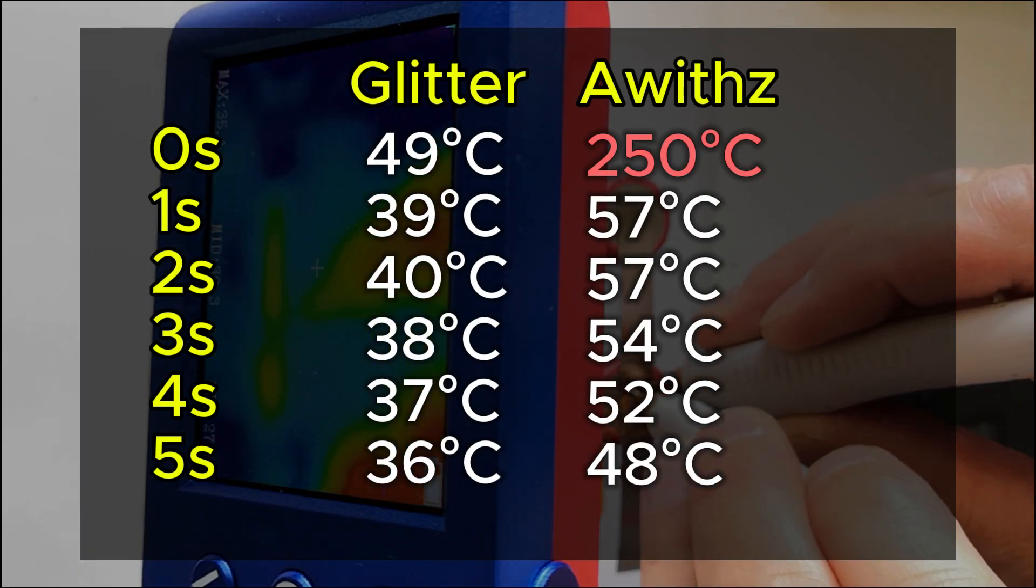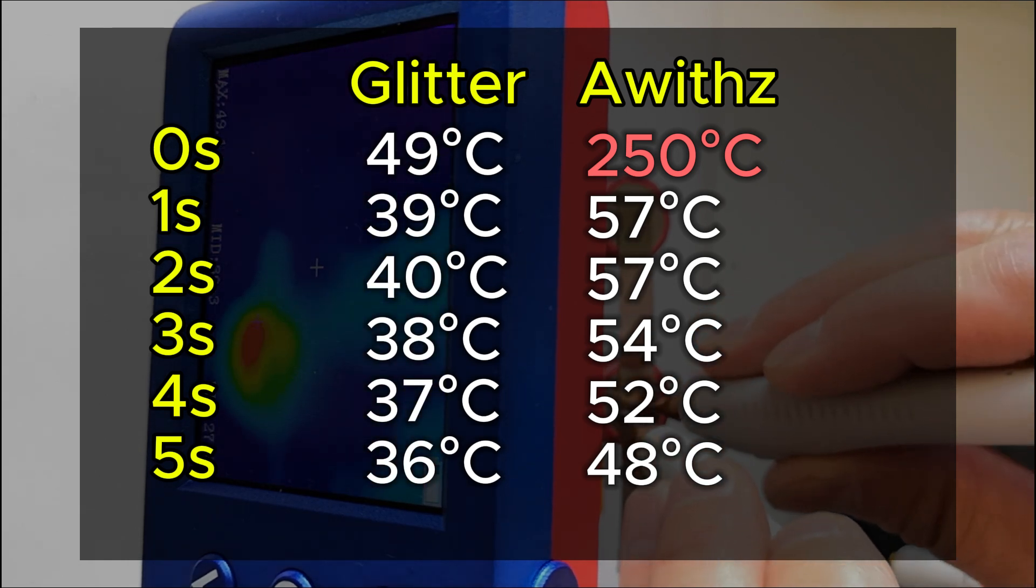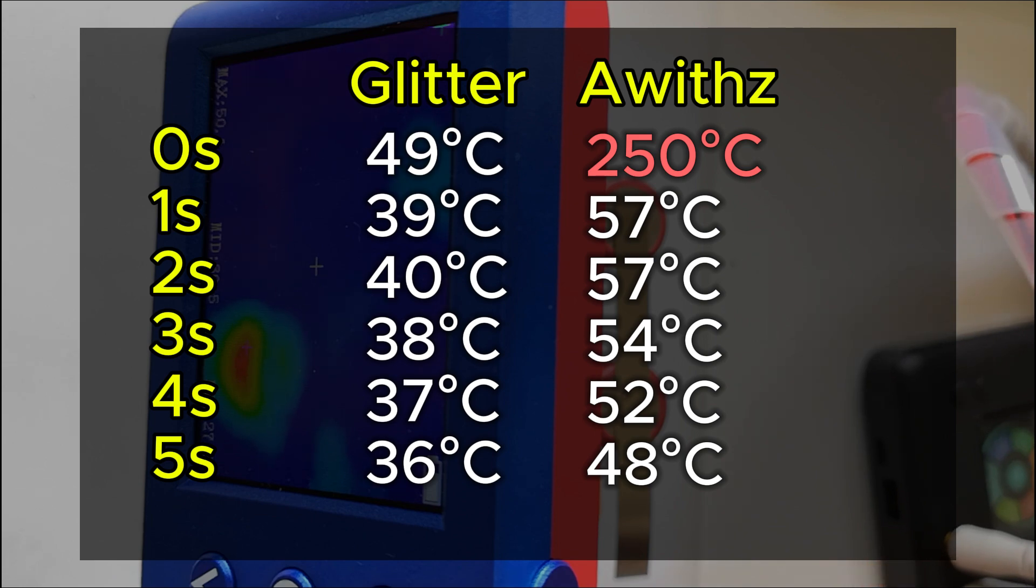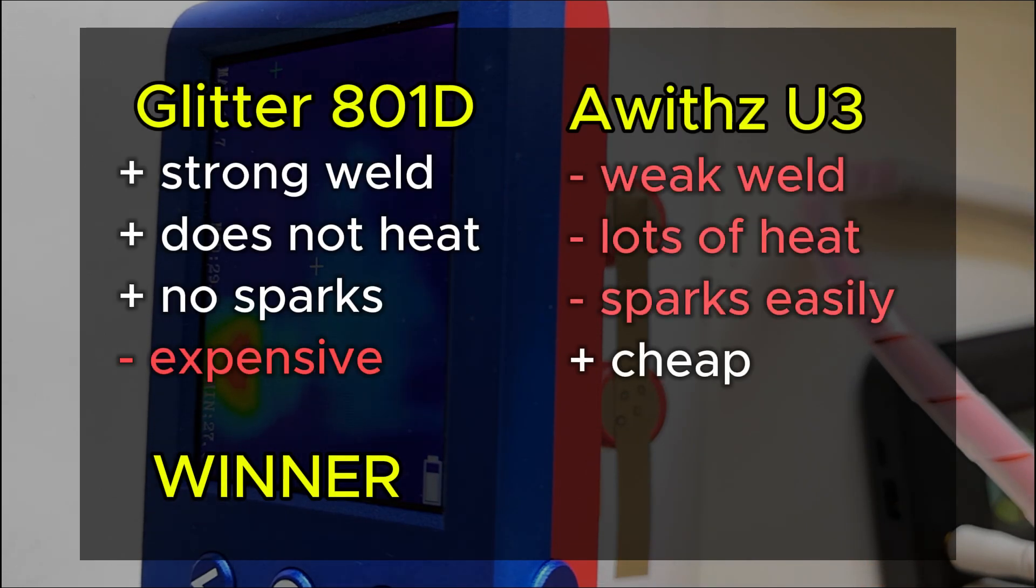Avis uses the native voltage of its lithium battery, 4.2 volts, which likely isn't enough. Glitter using 5.8 volts creates better welds while heating the battery less.